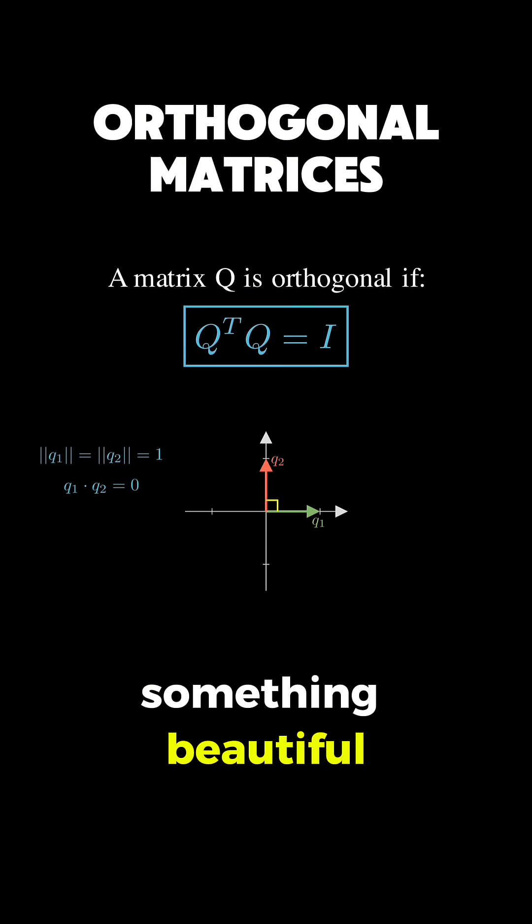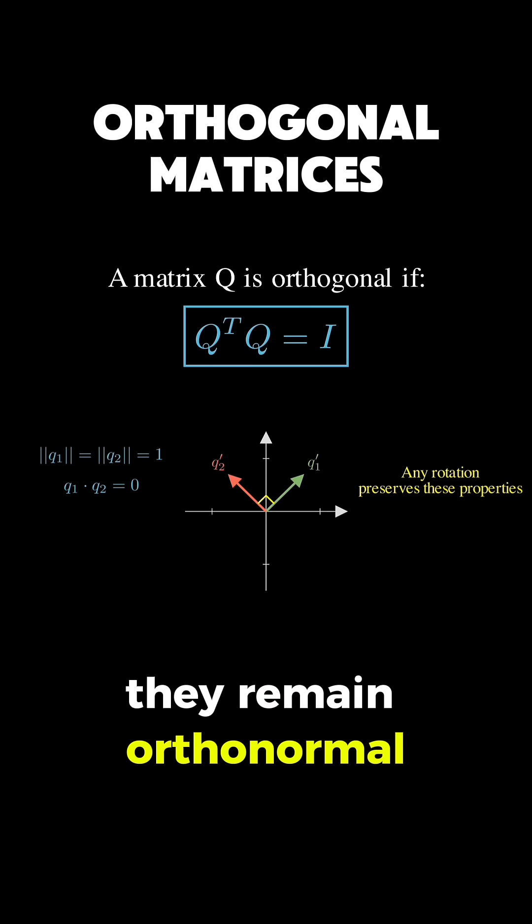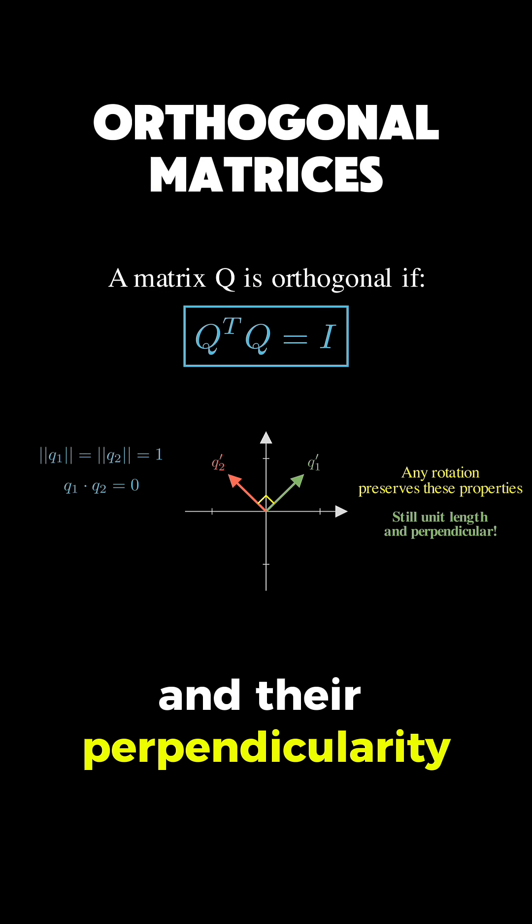Now, here is something beautiful. If we rotate both of these vectors by the same angle, they remain orthonormal. The rotation preserves their unit length and their perpendicularity.